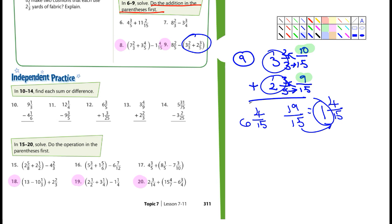So 2 times 3 is 6. And then 6 from 8 is 2. So the answer for number 9 would be 2 and 2/15. Okay? So that's how you do these problems here.